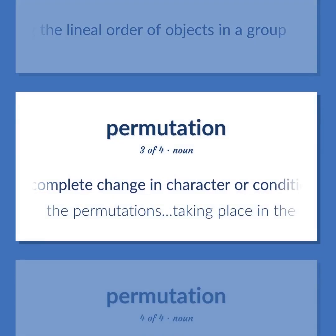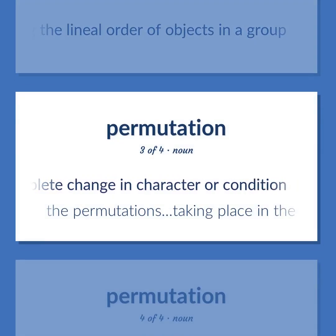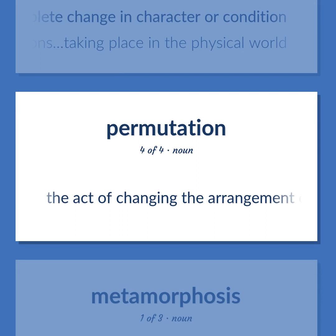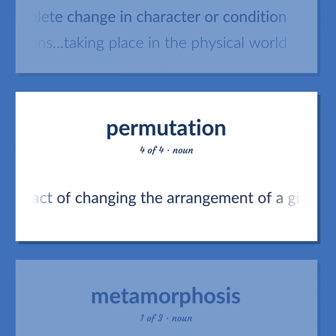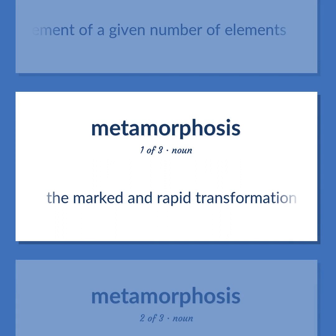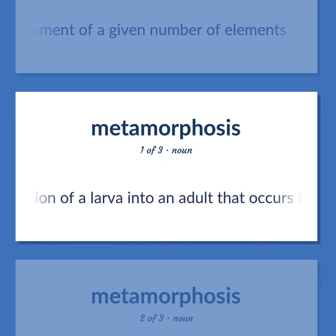Permutation: Complete change in character or condition — the permutations taking place in the physical world. The act of changing the arrangement of a given number of elements. Metamorphosis: The marked and rapid transformation of a larva into an adult that occurs in some animals.